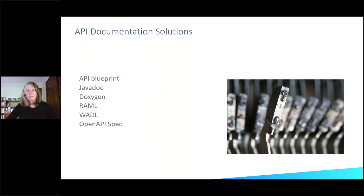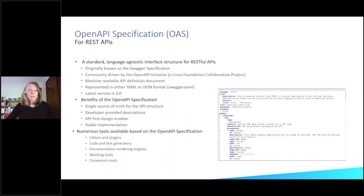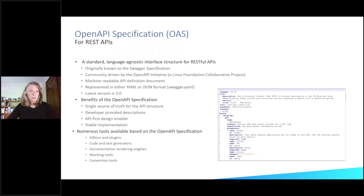There are lots of other types of API documentation solutions out there, but the one we chose was the open API spec. The open API spec is for REST APIs. It's a standard developed around 10 years ago that eventually became owned by the SmartBear company. It was called Swagger originally. It's a language-agnostic interface for RESTful APIs, and it's a machine-readable API definition represented in either YAML or JSON format. The latest version is 3.0.